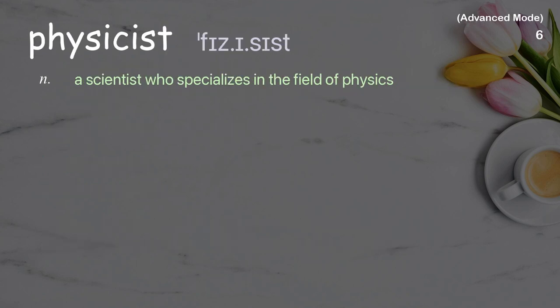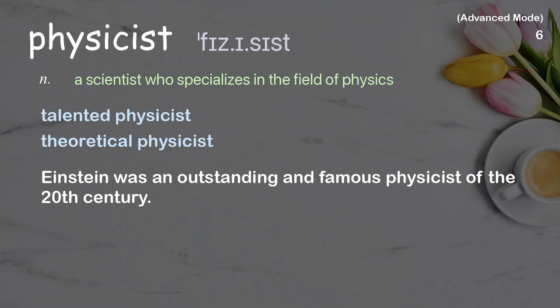Physicist. A scientist who specializes in the field of physics. Examples: talented physicist, theoretical physicist. Einstein was an outstanding and famous physicist of the 20th century.